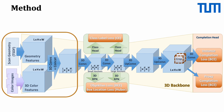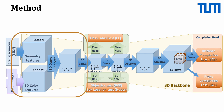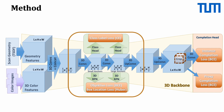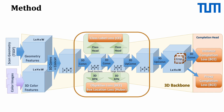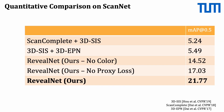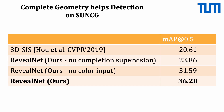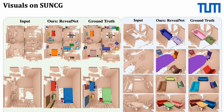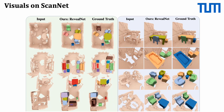Our method takes the incomplete scene as input and outputs instances with complete geometry. Our network jointly learns from geometry and color, and leverages an anchor mechanism to do detection, and finally predicts the 3D object's complete geometry. Our method outperforms alternative methods that do detection and completion separately on real data, and improves 3D instance segmentation results on ScanNet.